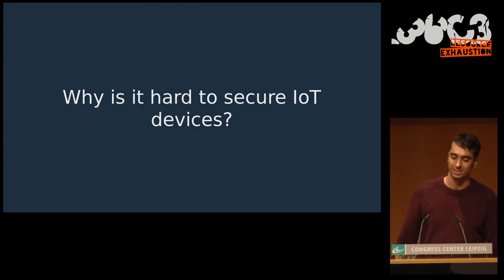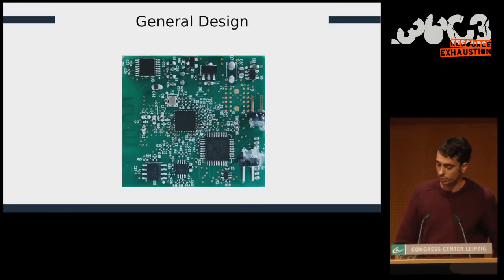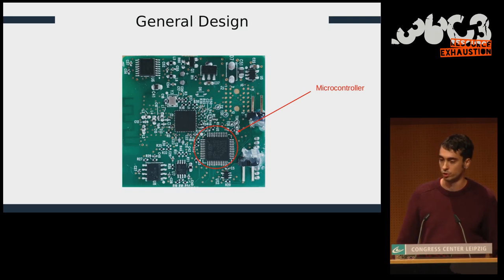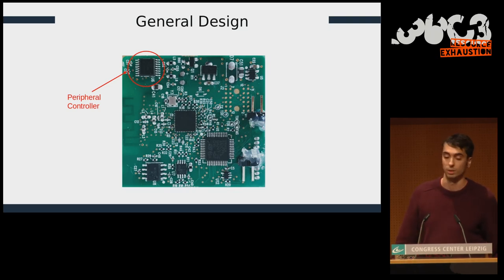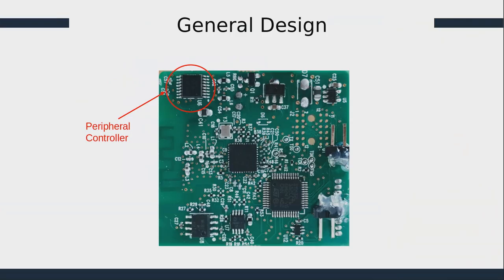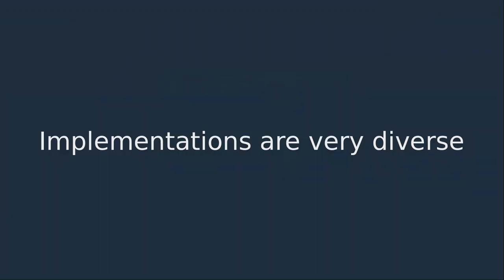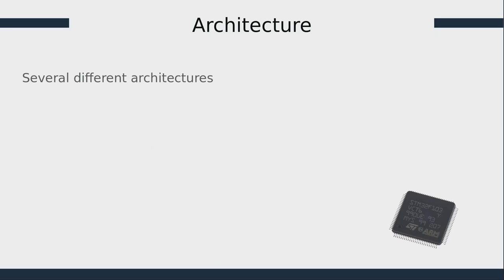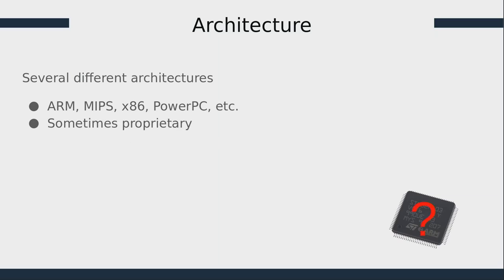Why is it hard to secure IoT devices? To answer this, we have to look at how IoT devices work and are made. When you remove all the plastic and peripherals, IoT devices look like a board with some chips — a main chip (the microcontroller) that runs the firmware, and one or more peripheral controllers interacting with external peripherals such as a motor or cameras. Though the design is generic, implementations are very diverse. Firmware may run on several architectures such as ARM, MIPS, x86, PowerPC, and sometimes even proprietary ones.